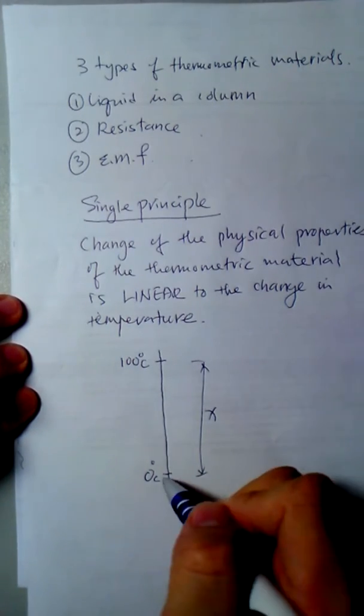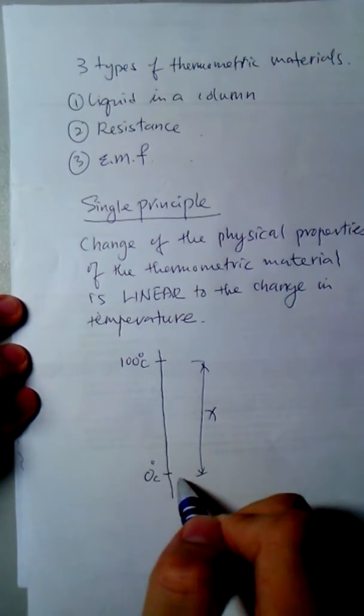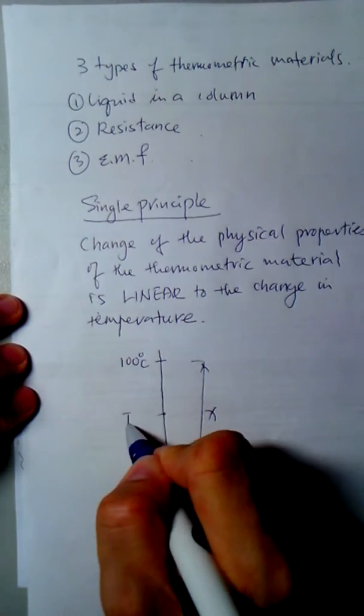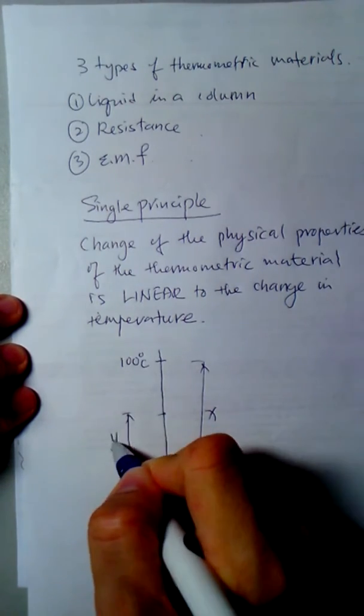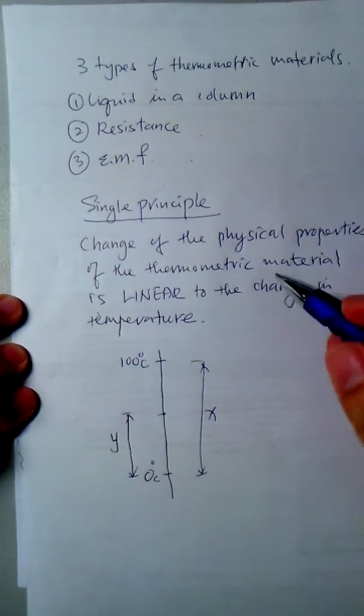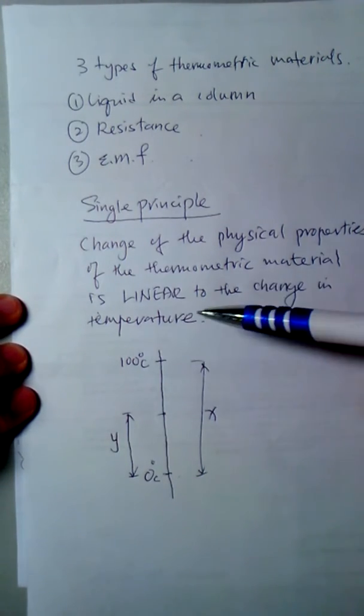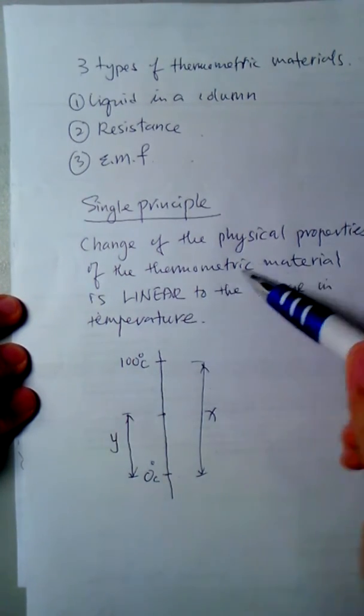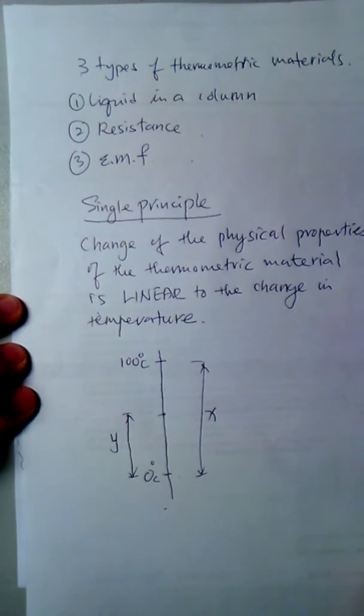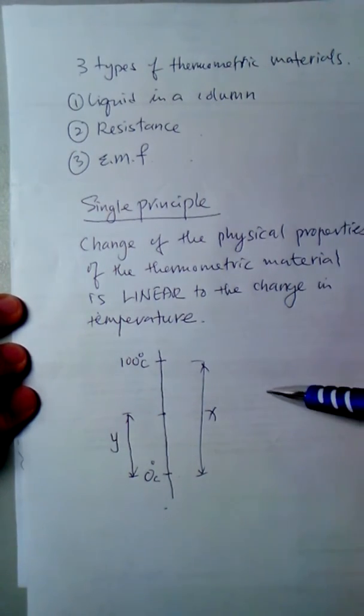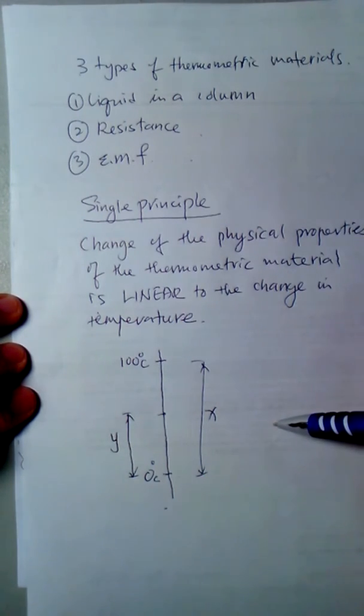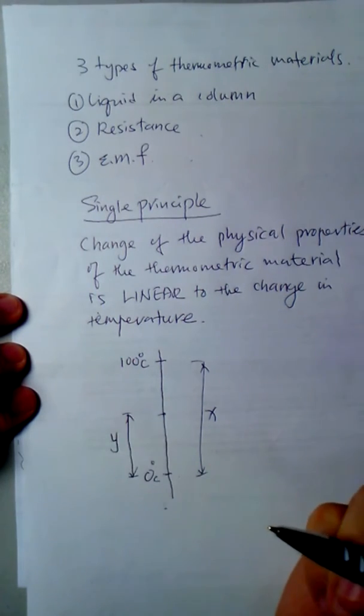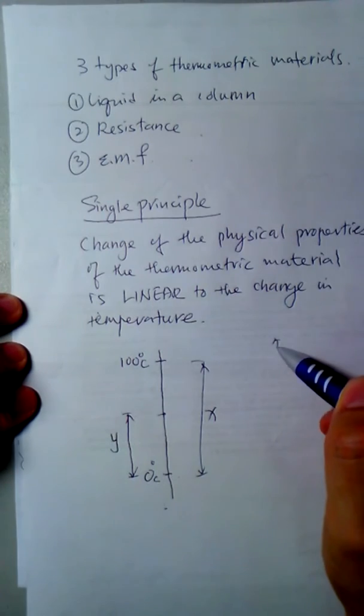Now if I can measure the temperature of a substance and you show me the length of y, because my assumption is the change in the physical property, meaning the length of the liquid in a column, is linear to the change in temperature. Through the proportionality concept, I'm able to calculate what is the temperature of the substance when the length is y. Simply put, you can draw a graph.